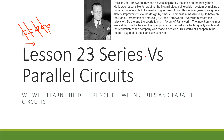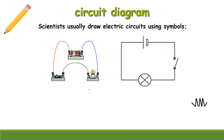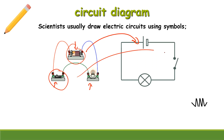Before we can talk about circuits, we need to talk about the parts of circuits. Scientists usually do a circuit diagram using symbols. Instead of drawing an artistic light bulb, switch, and battery, we use symbols to keep it simple. Instead of a battery we use a symbol like this; instead of a switch, a symbol like this; instead of a light bulb, a symbol like this.